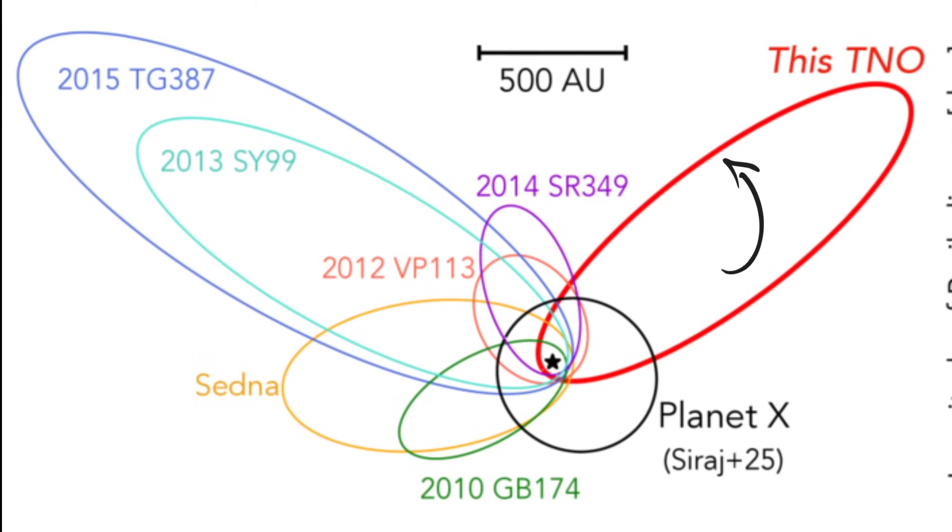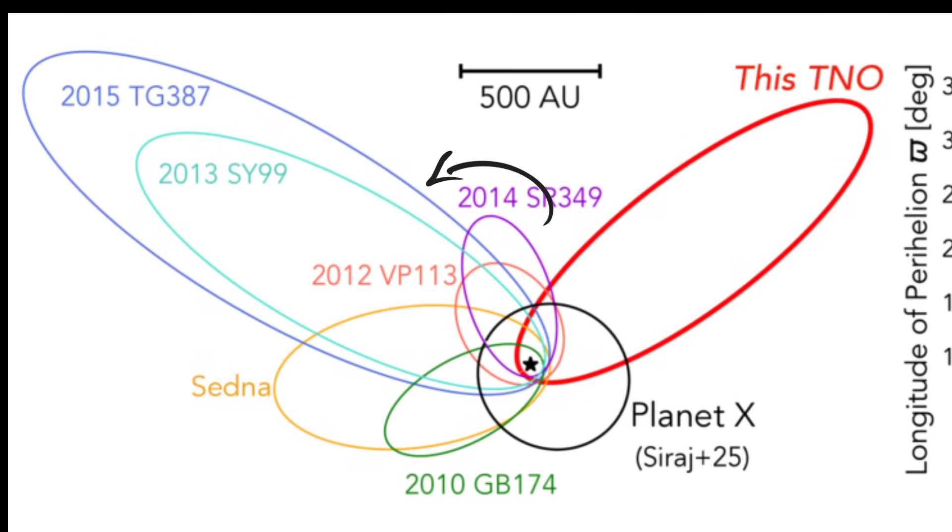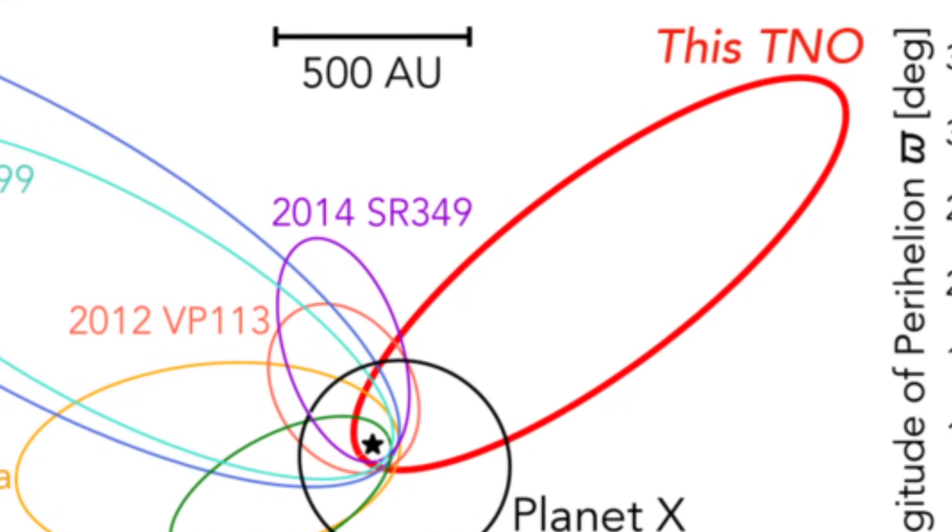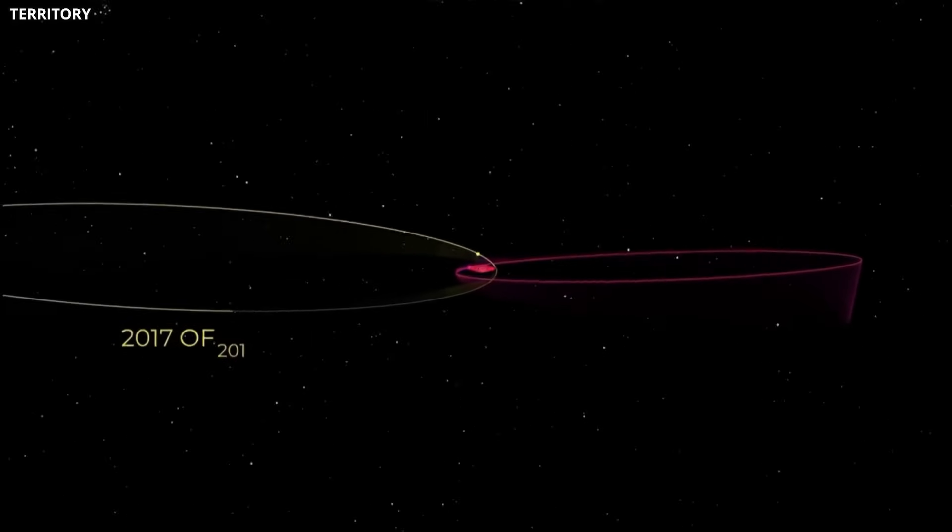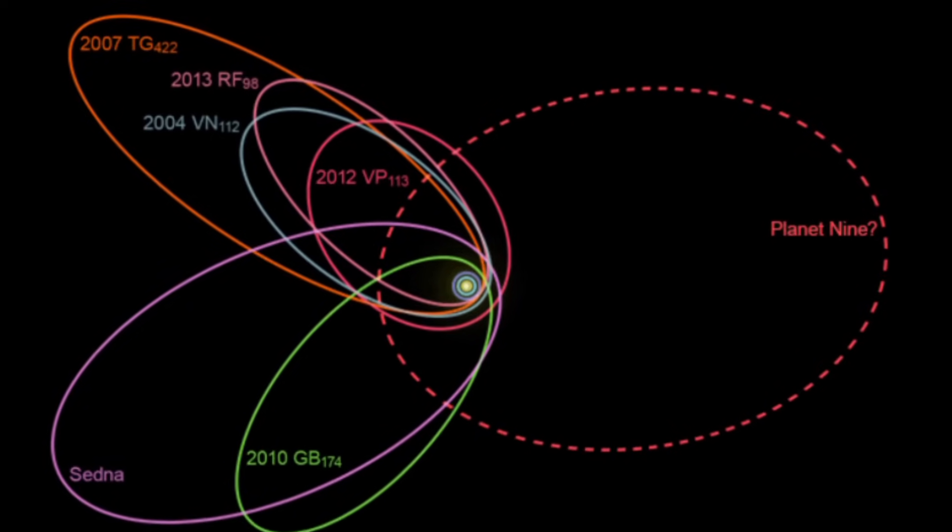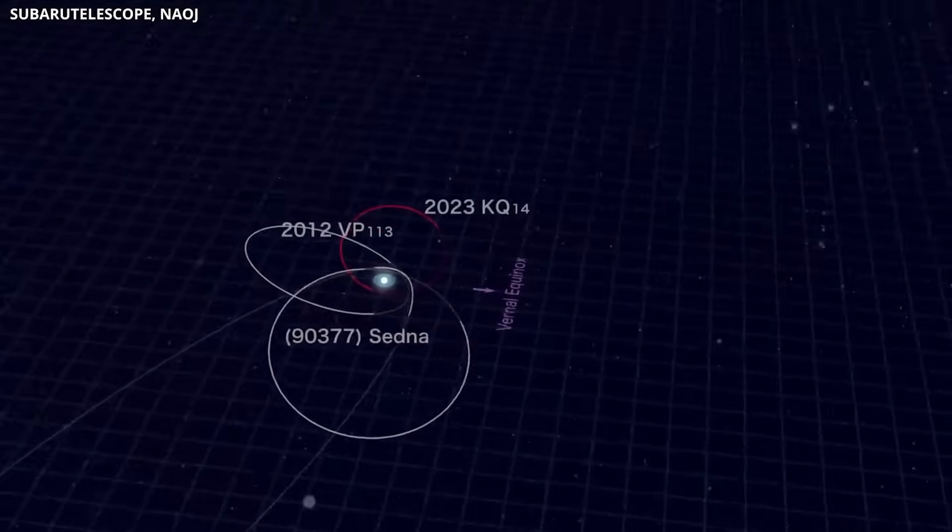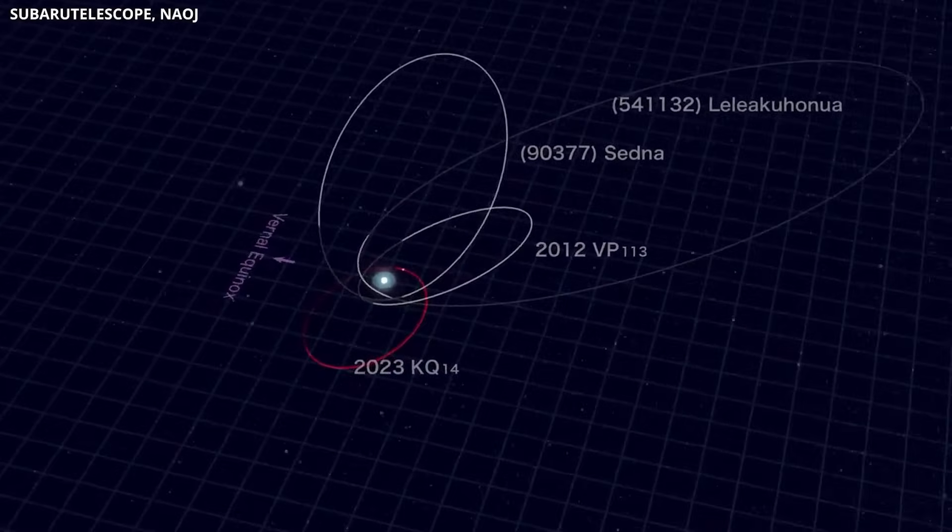But 2017 OF201 doesn't fit the same clustered pattern as the other distant objects thought to be shaped by Planet 9. It moves through space on a path of its own. On the other hand, Ammonite's opposite orbit makes it even harder to believe that one hidden planet is guiding all these distant objects. If more of these misfits are found, the idea of one big shepherd planet starts to look shaky.